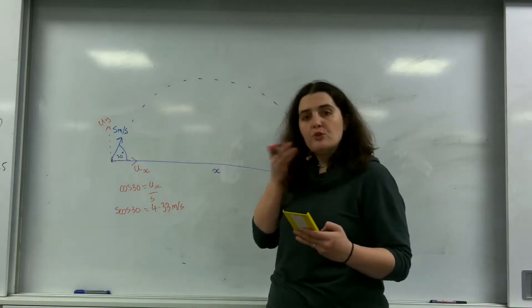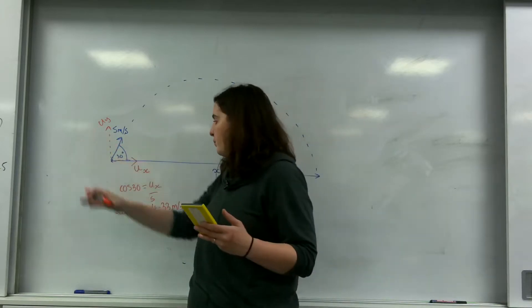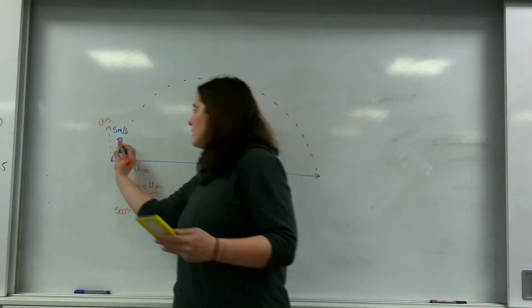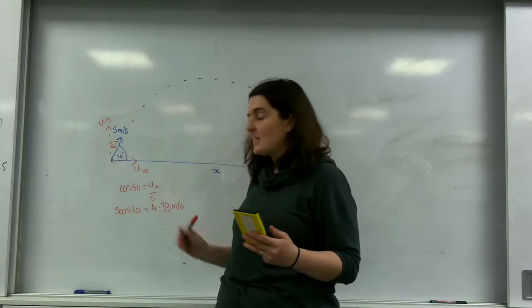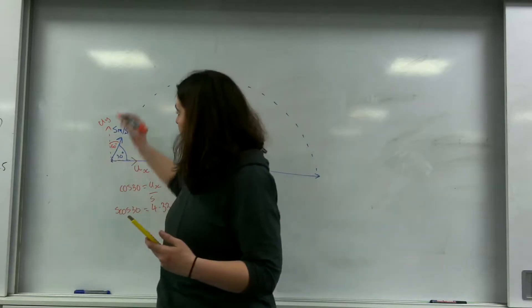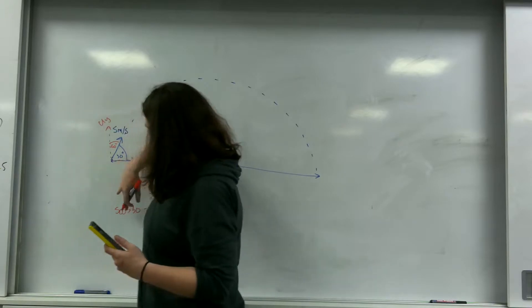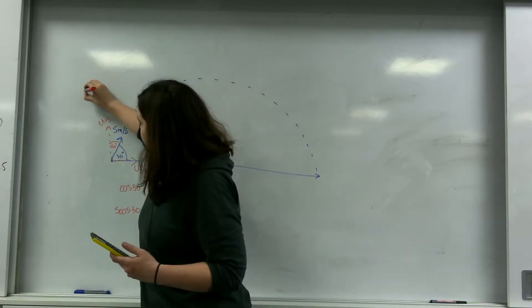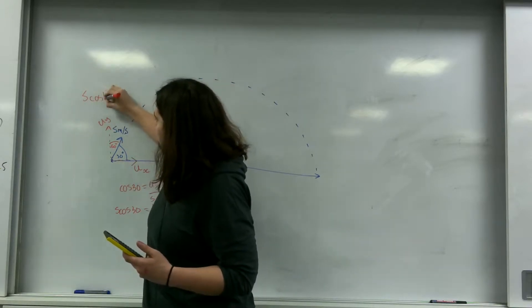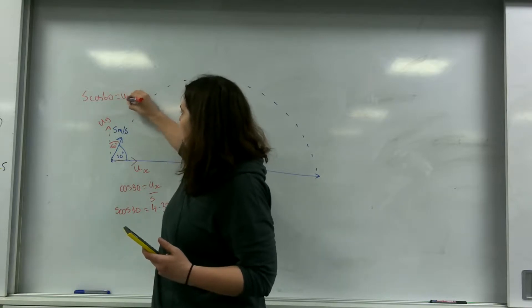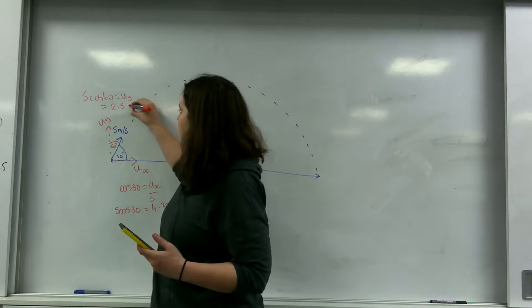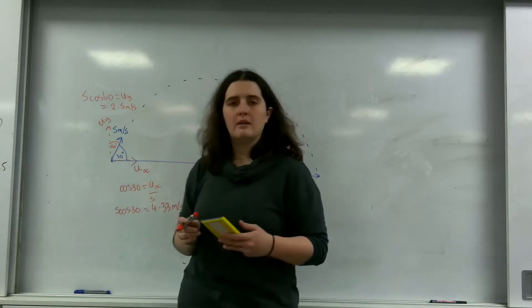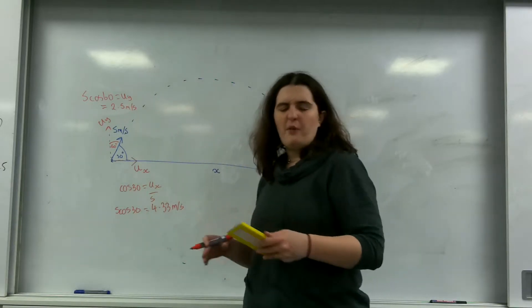And you are welcome to use sine 30 on this one, but what I'm going to do is cheat a little bit. And I do like writing the other direction in. So I've got 60, so I will be using cos. And I know that 5 cos 60 equals uy, which equals 2.5 metres per second. So that's the first bit out of the way.